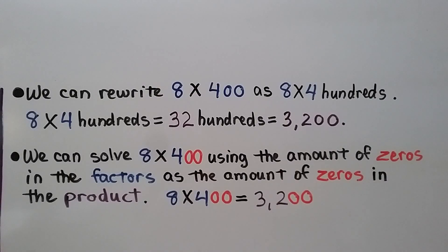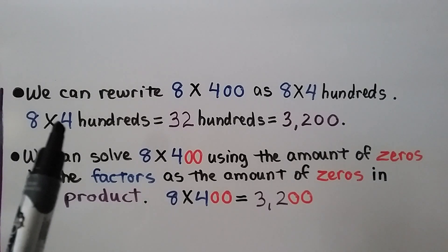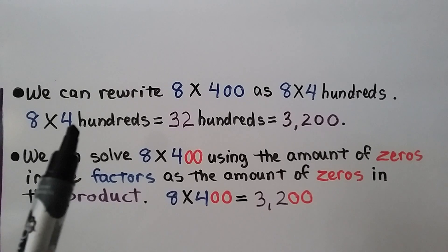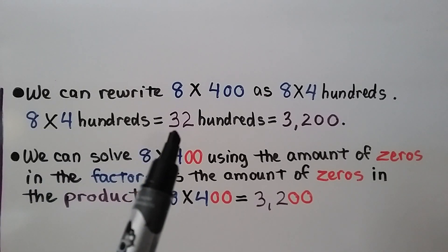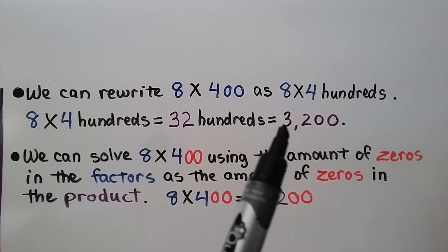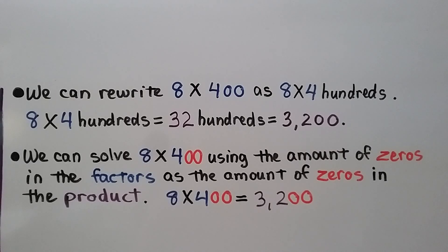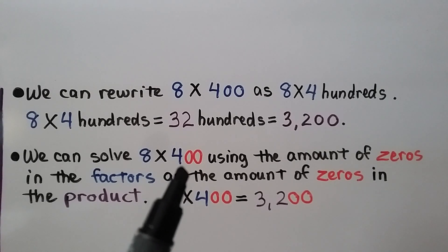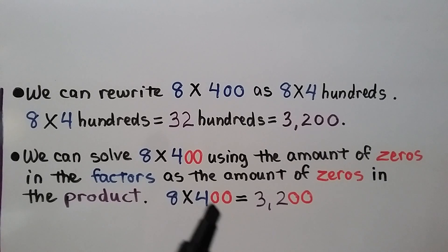We can rewrite 8 times 400 as 8 times 4 hundreds. Looking at the basic fact 8 times 4, that's 32 hundreds, which is 3,200. We can solve 8 times 400 using the number of zeros in the factors as the number of zeros in the product. We have two zeros in the factor, so there are two zeros in the product: 3,200.